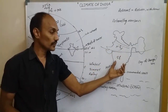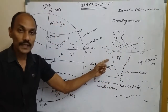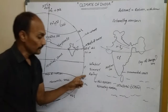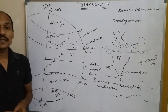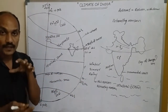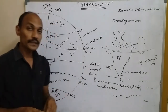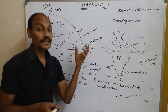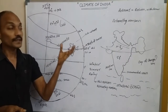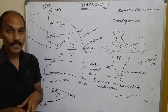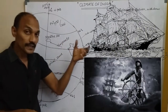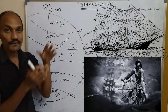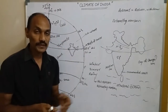Generally, the climate of India is strongly influenced by the monsoon. The word 'monsoon' comes from the Arabic word 'mausam,' which means season. In olden days, the Arabian sailors who came to India named the reversal wind system 'mausam' because they used to travel by boats or ships.